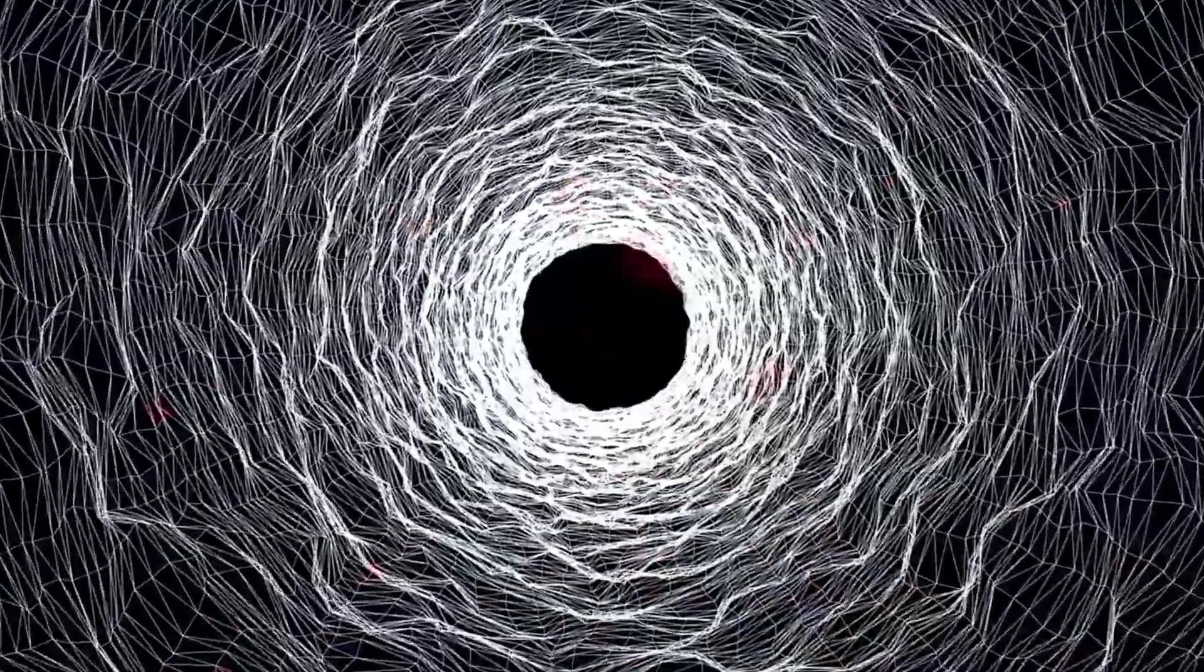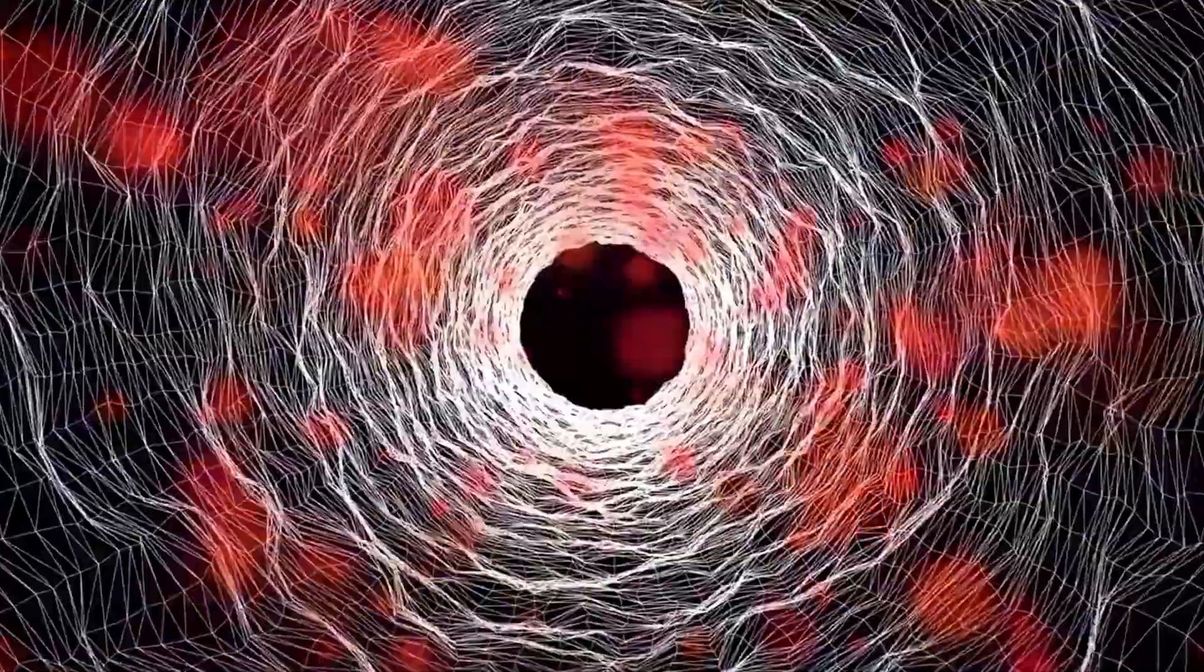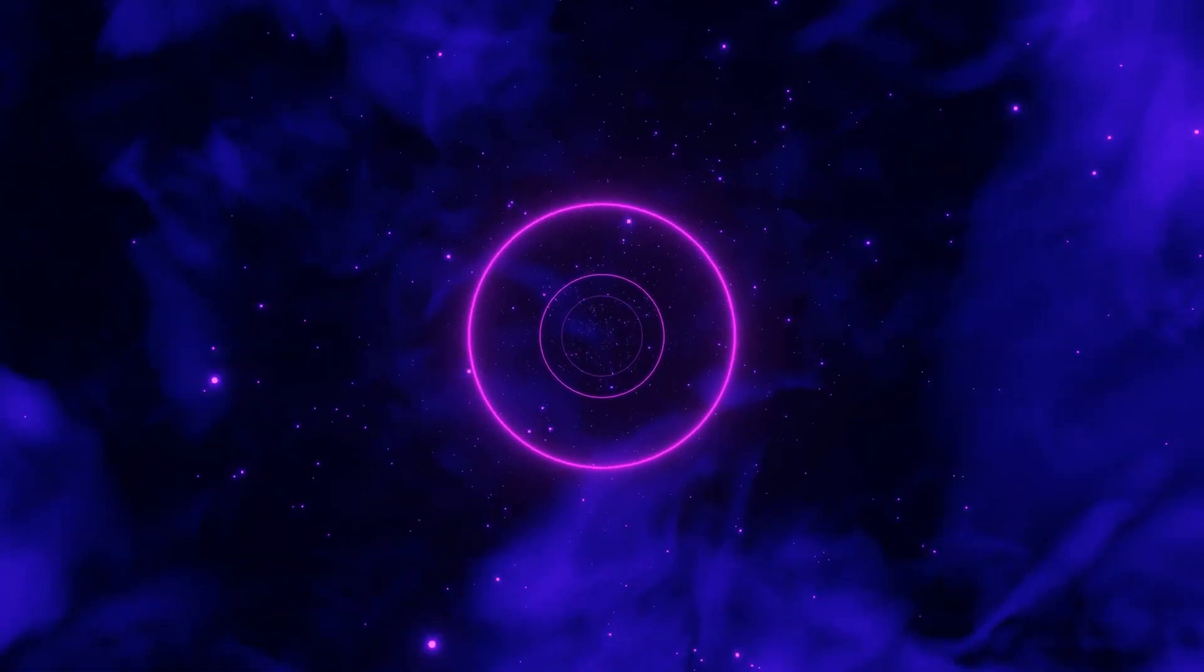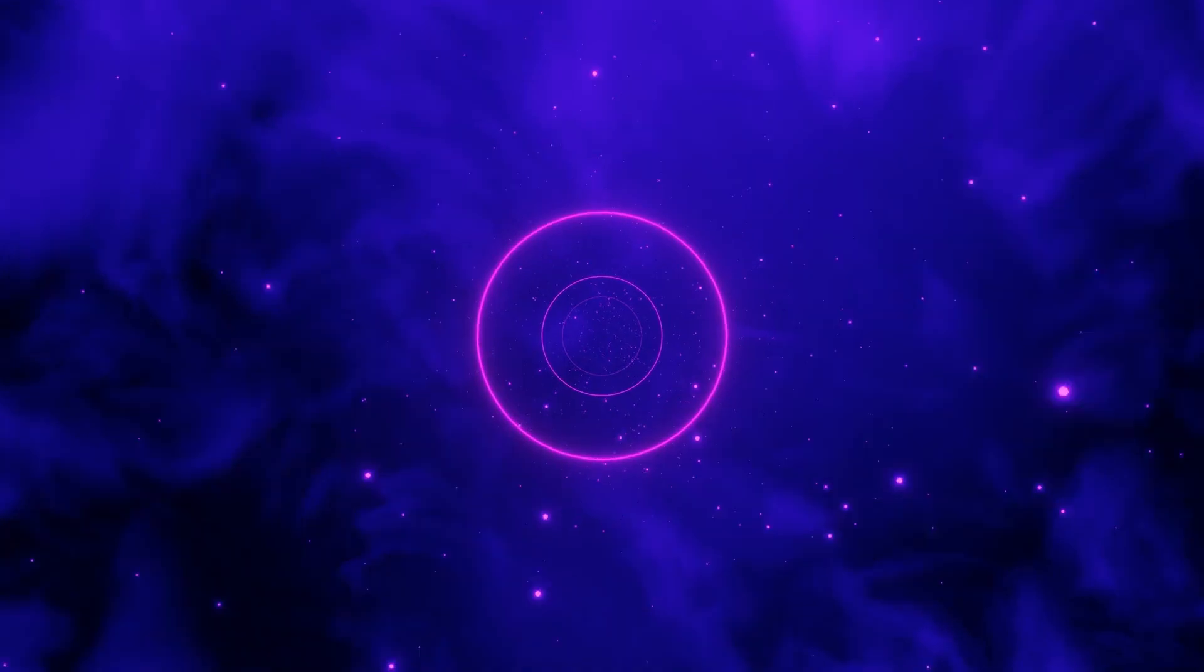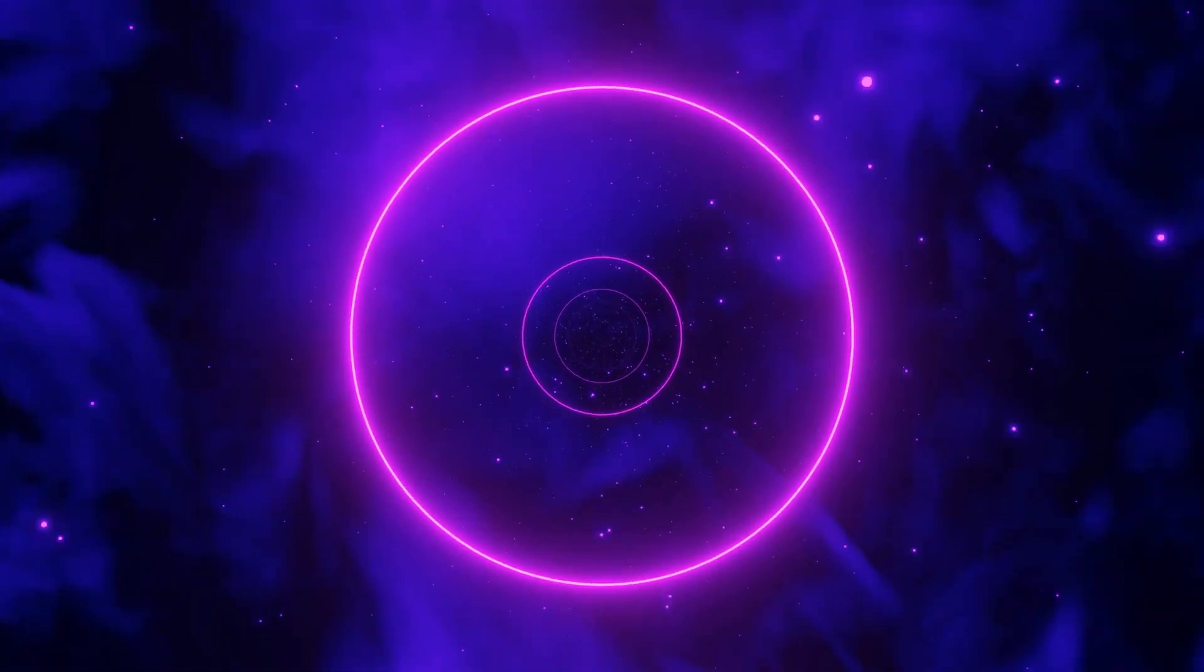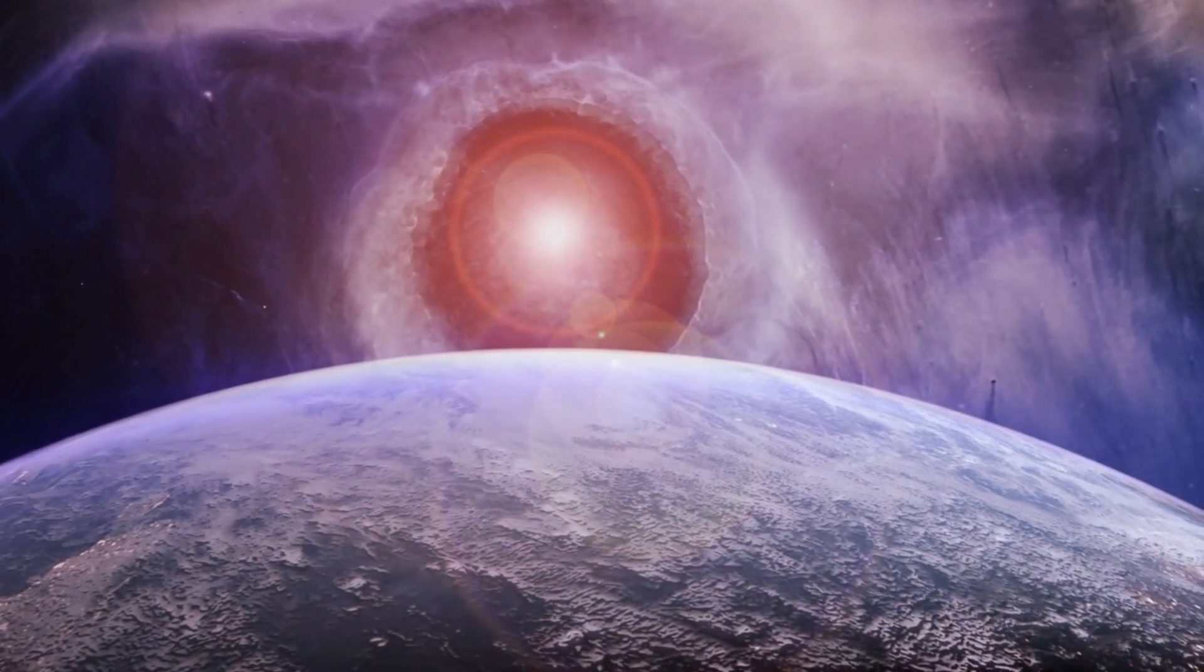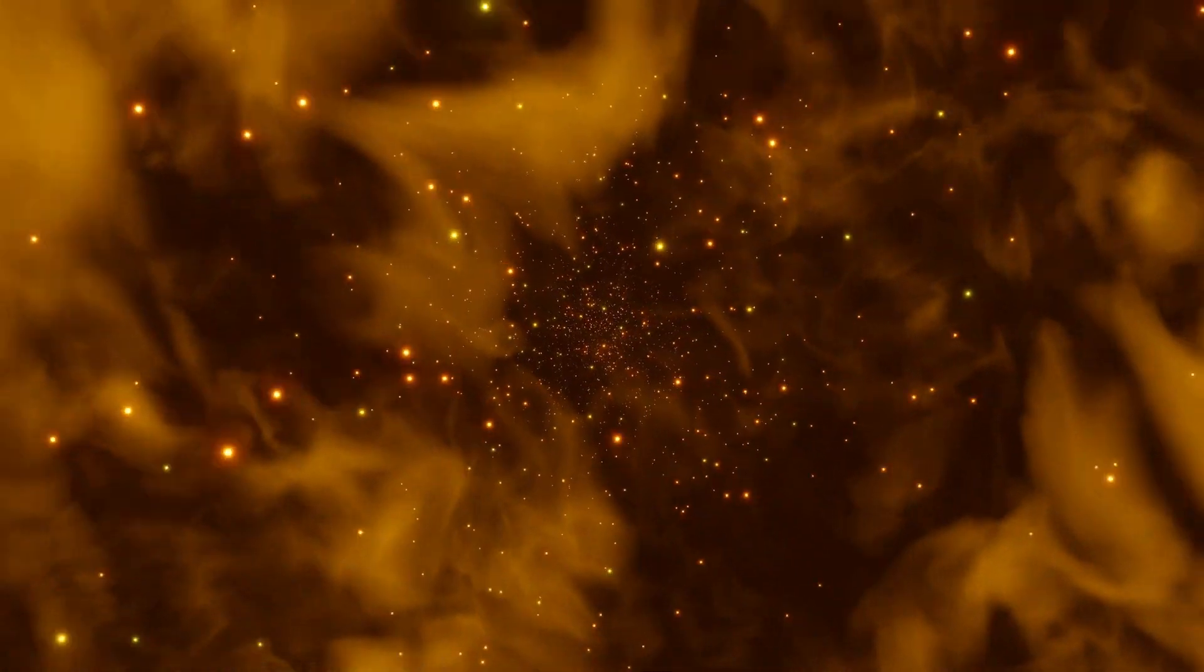Dark openings are not isolated entities within the universe, but are intricately connected to the life cycles of stars and the evolution of galaxies. Stellar mass black holes form when massive stars undergo supernova explosions, leaving behind dense remnants that collapse under their own gravity. This process contributes to the recycling of material in the universe, as black holes can feed on nearby gas and dust, enriching their surroundings with energy and radiation. Additionally, dark openings may play a central role in the formation of galaxies themselves. Many large galaxies, including our own Milky Way, contain supermassive black holes at their centers.